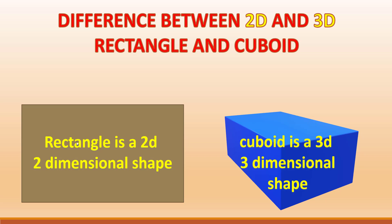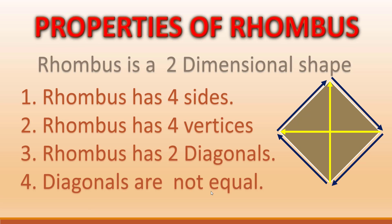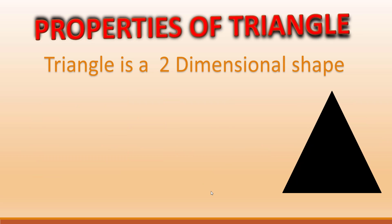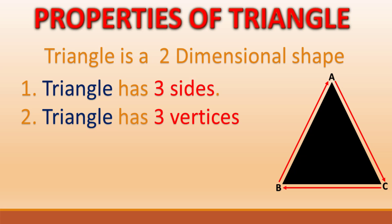Properties of rhombus: the rhombus is a two-dimensional shape. It has four sides, four vertices, and two diagonals. The diagonals of a rhombus are not equal. Triangle is a two-dimensional shape. The vertices of a triangle are A, B, and C. The triangle has three sides: AB, BC, and AC.